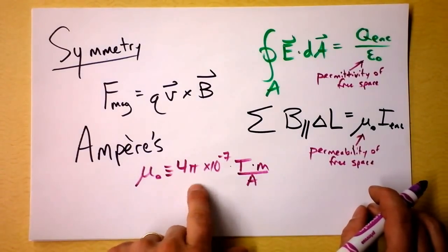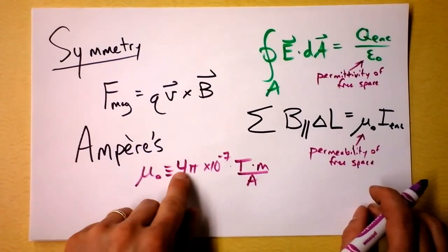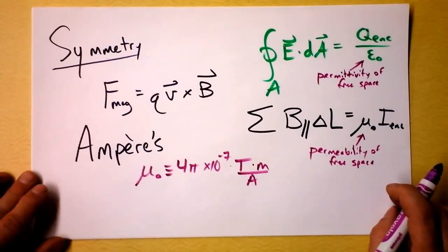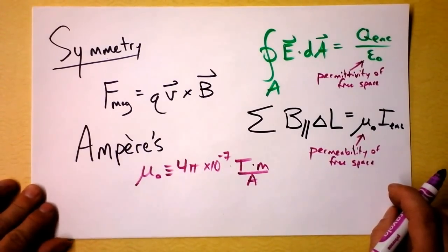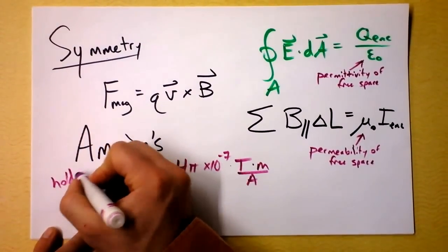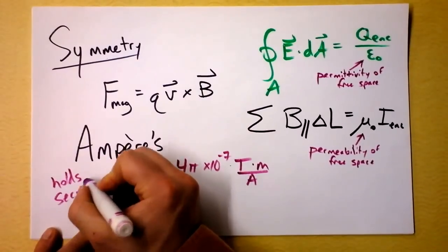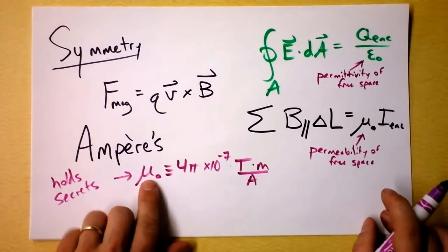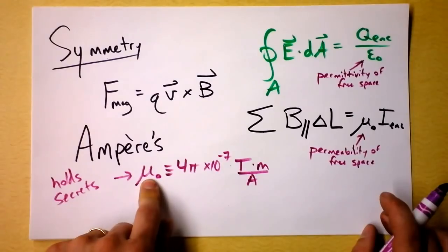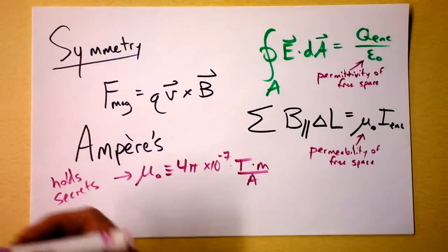Now mu naught doesn't have any error. It is exactly 4 pi. And that is known forever. And the beautiful thing about that is it's not a measured quantity. This mu naught holds great secrets. It's because it's related to other fundamental constants of the universe and it's calculated from them that we can say that it is absolutely and precisely known. Wonderful stuff.